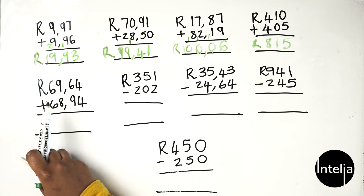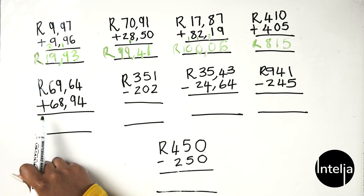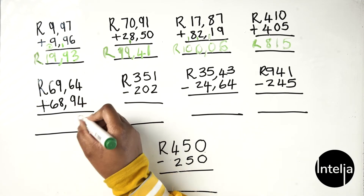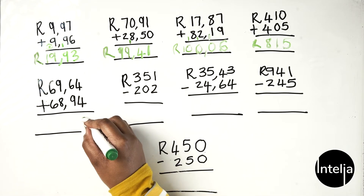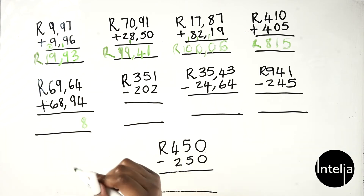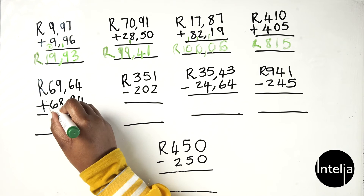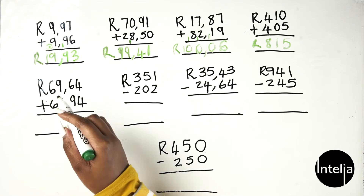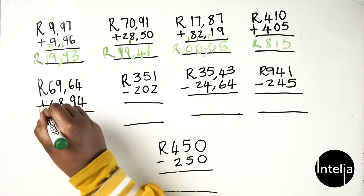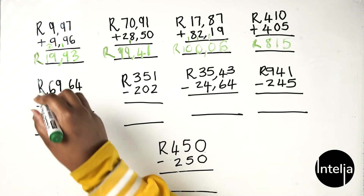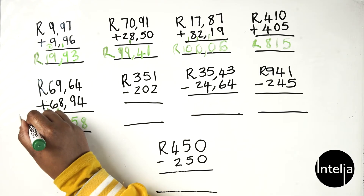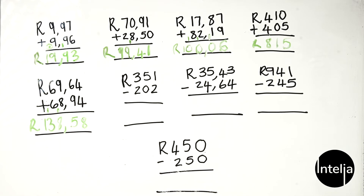Moving on to the next: 69 rand 64 cents plus 68 rands 94 cents. Add 4 plus 4 — you get 8. Then 9 plus 6 gives you 15 — write down your 5, carry the 1. Don't forget your comma. 9 plus 8 plus 1 gives you 18 — write down your 8, carry the 1. Then 6 plus 6 is 12, plus the carried 1 gives you 13. Your answer is 138 rands 58 cents.